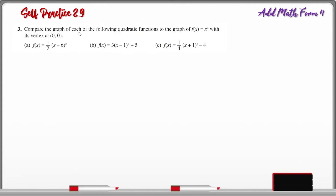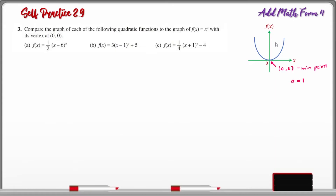Question number 3. Compare the graph of each of the following quadratic functions to the graph f of x equals x squared, with its vertex at (0, 0). The graph of f of x equals x squared has its minimum point at the origin (0, 0). From this function, a equals 1. There is no h value, so the axis of symmetry is the y-axis, meaning x equals 0, and the y-intercept is also 0.